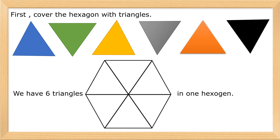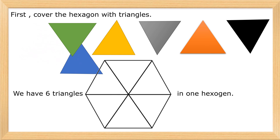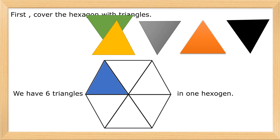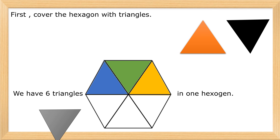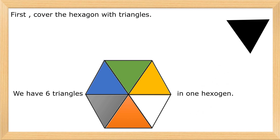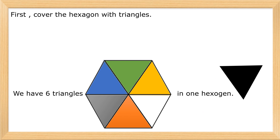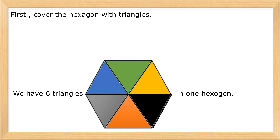First, cover the hexagon with triangles. One, two, three, four, five, six. We have six triangles in one hexagon.